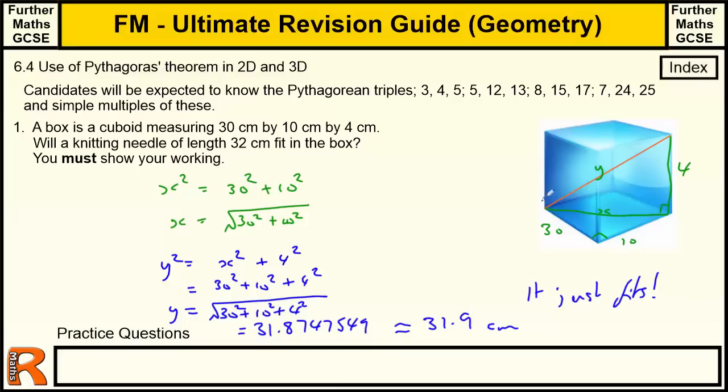So that's a standard three-dimensional Pythagoras question. The shortcut for that, if it was 3D coordinates or anything in a 3D grid, you just square the individual lengths of the cuboid and add them together and square root the whole lot. It gives you the diagonal.